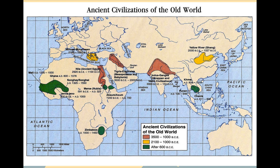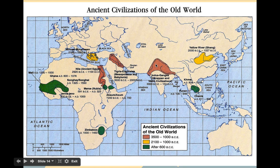Some of the ancient civilizations of the Old World: here we have Mesopotamia, located between the Tigris and the Euphrates rivers; the Indus River Valley civilizations in modern-day India; the Yellow River civilizations in modern-day China; and then the Nile civilization, or ancient Egypt.